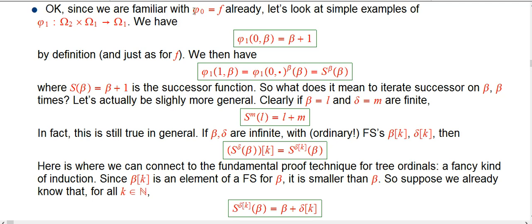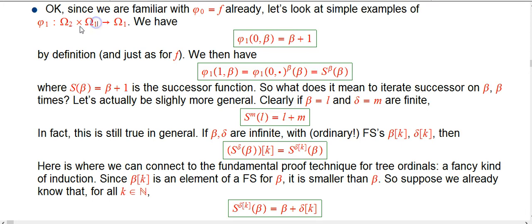We know what phi sub zero is — it's good old fashioned f, so we're already familiar with that. Let's look at phi sub one somewhat carefully. That's something that takes an omega-two argument, which might be just an ordinary natural number or a countable ordinal — it doesn't have to be only an omega-two. That's sort of the control argument, and the main argument is an omega-one, and it spits out something in omega-one.